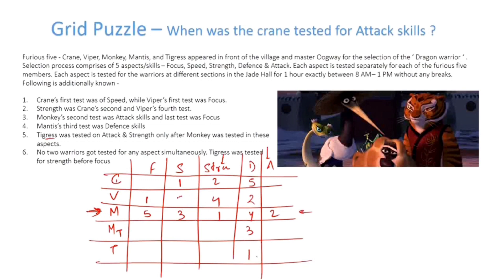This must be 5, this must be 5, this must be 3. This Strength column has 2, 4, 1, so 3 and 5 remain. This must be 3, this must be 5.